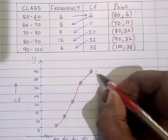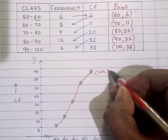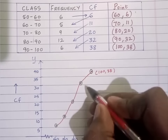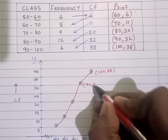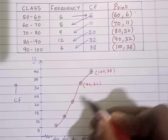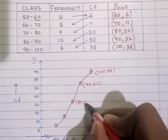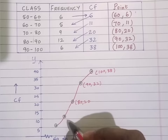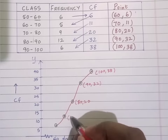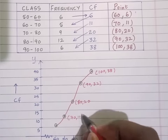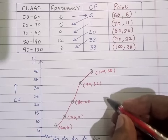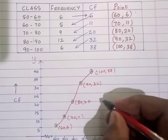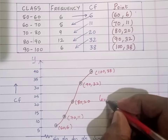I will indicate the points: (100, 38), (90, 32), (80, 20), (70, 11), (60, 6). This is the less than type OJAL.